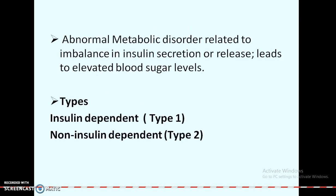The definition of diabetes is an abnormal metabolic disorder which is related to the imbalance in insulin secretion or its release, and that leads to elevated blood sugar levels. There are two types of diabetes mellitus: insulin-dependent and non-insulin-dependent, which are considered as type 1 and type 2.